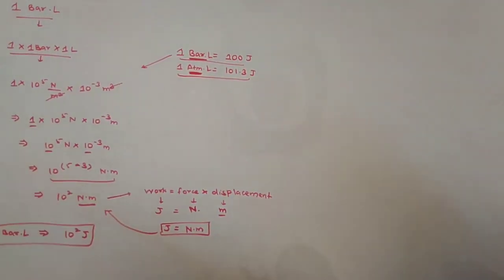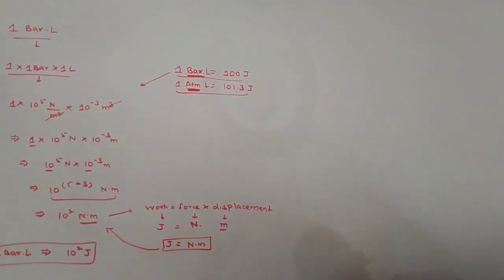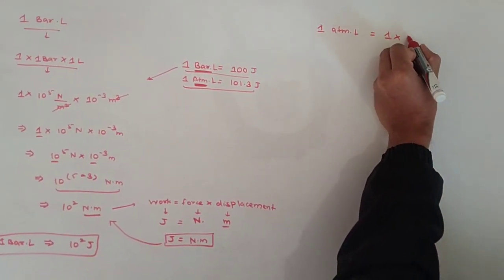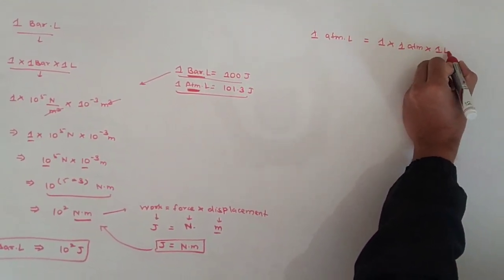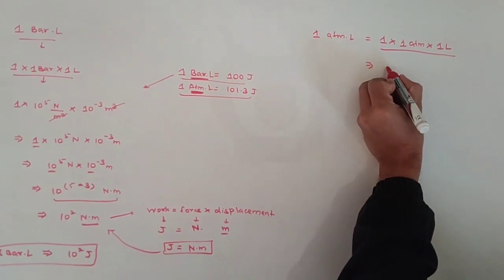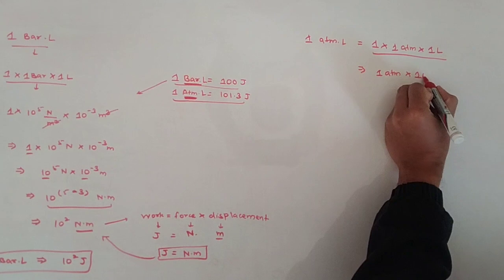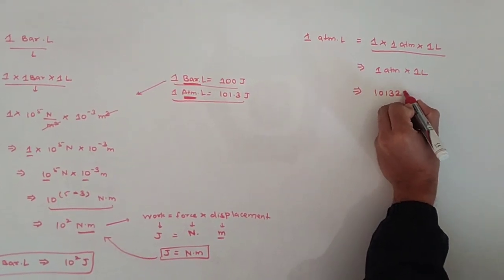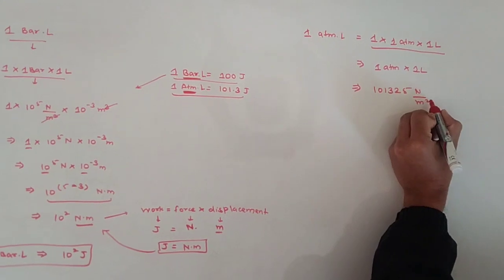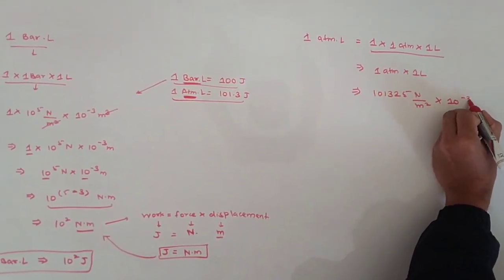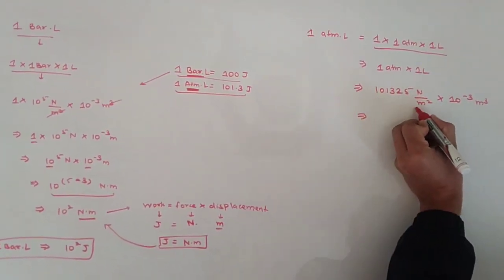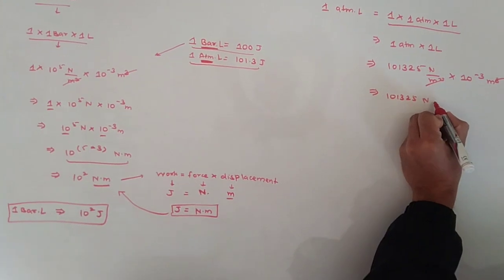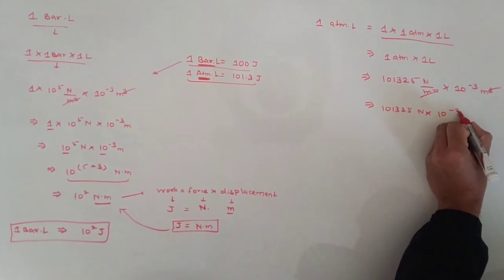We will convert atmosphere into Newton per meter squared. So 1 atmosphere·litre equals 1 atmosphere multiplied by 1 litre. We know 1 atmosphere equals 101,325 Newton per meter squared, and 1 litre equals 10⁻³ meter cubed. The meter squared terms cancel, leaving 101,325 Newton multiplied by 10⁻³ meter.